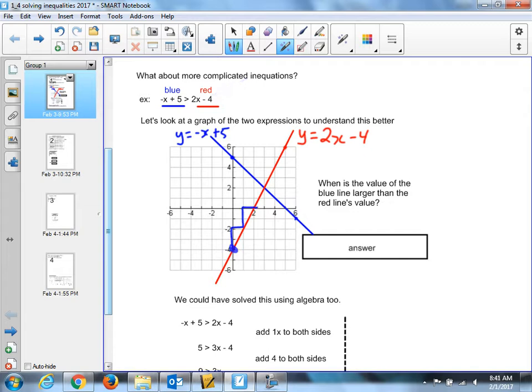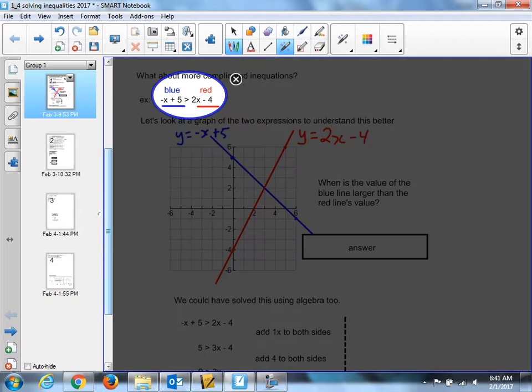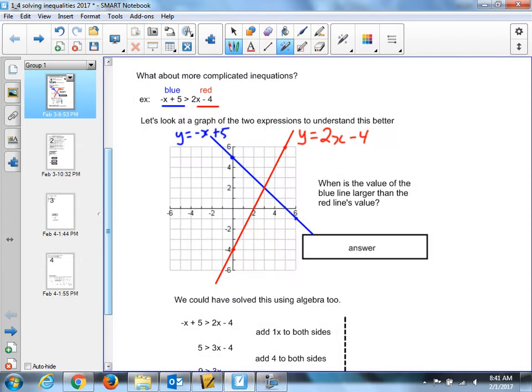Now, this is where we, hopefully you guys are at the same spot. Really, what this is asking is, when is this blue line greater than, so higher than, the red line, right? So, when is this, you can just read this off the graph, maybe. When is the blue line larger than the red line's value? Because if you're just strictly, who cares what the equation is? When is blue greater than red, the value of it?